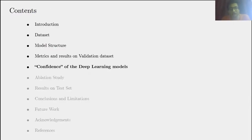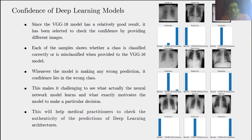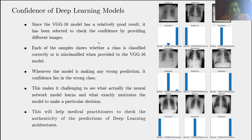Now let's talk about the confidence of the deep learning models — what the model sees when testing on the validation dataset. Since the VGG16 model has a relatively good result, it was selected to check confidence by providing different images. Each sample shows whether a class is classified correctly or misclassified. Whenever a model makes a wrong prediction, its confidence lies in the wrong class. For example, a COVID-19 image is predicted as pneumonia with high confidence, but it is actually COVID-19. This makes it challenging to understand what the neural network learns and what motivates a particular decision. This might help medical practitioners check the authenticity of deep learning predictions.